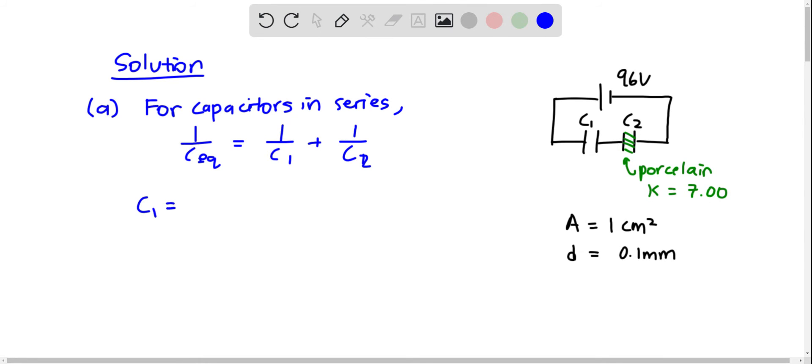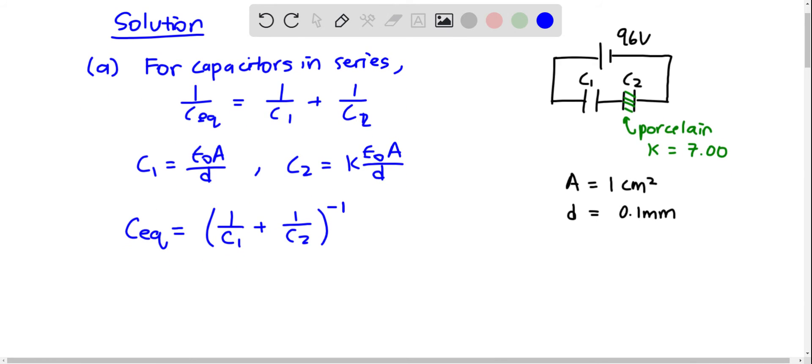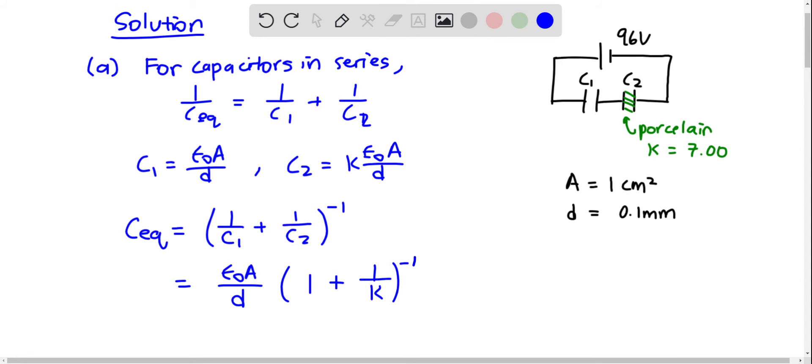C1 is equal to epsilon not A over D, and then C2 is kappa epsilon not A over D. The equivalent capacitance is 1 over C1 plus 1 over C2 and take the reciprocal of that. When you simplify, you get epsilon not A over D times 1 plus 1 over kappa, and the whole thing reciprocal.